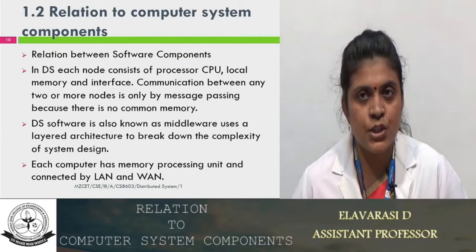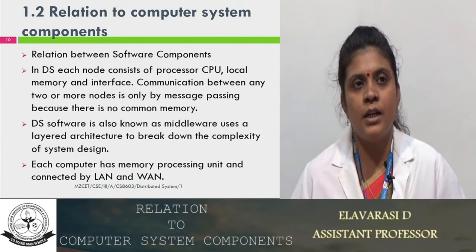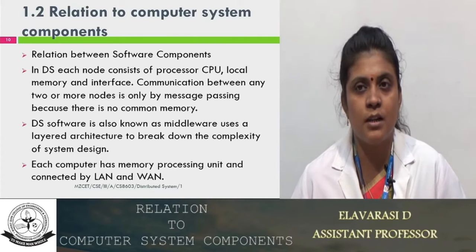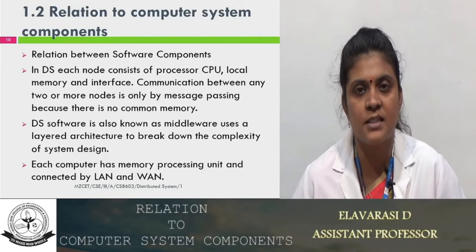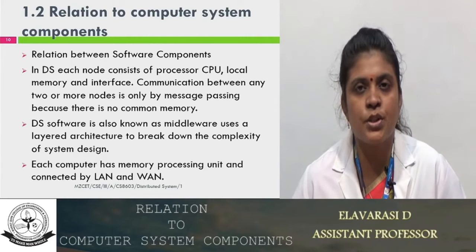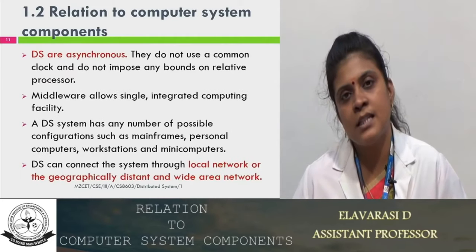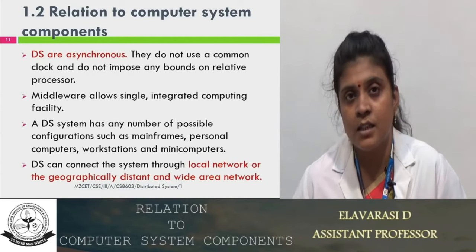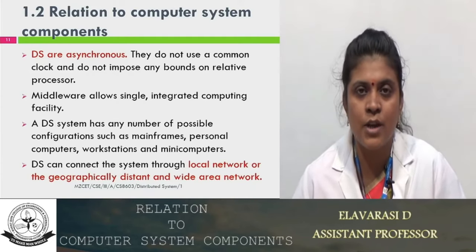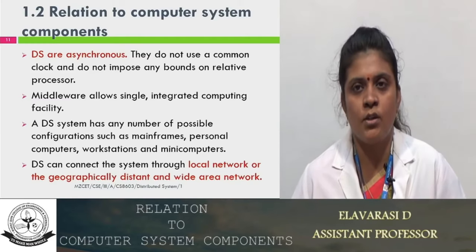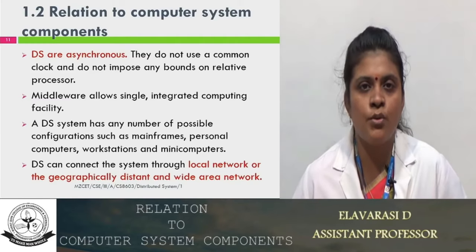Next we are going to discuss the relation to the computer system components. Every process in the distributed system consists of a CPU and its local memory. Communication only happens between processes through the communication network via message passing — there is no common memory. The middleware layer provides abstraction and reduces the complexity of the architecture. The complex problem is divided into sub-tasks and run on different systems. The distributed system is asynchronous — it does not have a common clock and there is no bound imposed on relative processes.